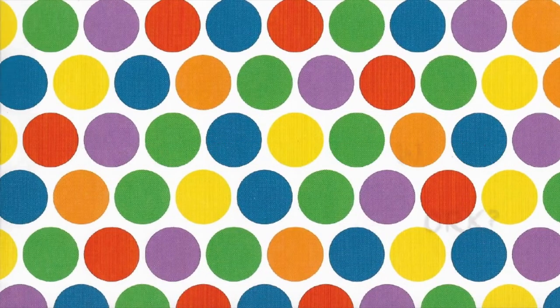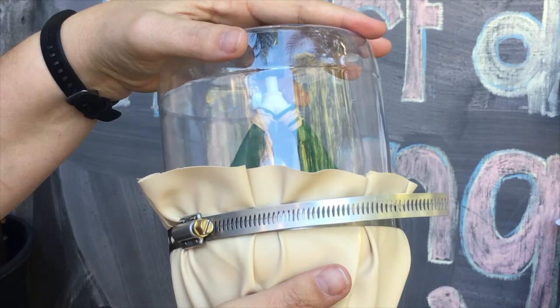How do lungs work? This is the model that I showed to you at the beginning of the lesson. The glass jar is meant to be our rib cage. The two balloons inside are meant to be our lungs and the little white tube and the black cork are our windpipe. The rubber secured underneath seals the glass jar and it's meant to act as the muscle under our rib cage called the diaphragm.